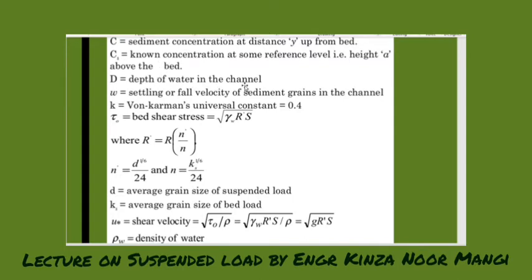Then D is the depth of the water in the channel. W is the settling or the fall velocity of the sediment grains in the channel. K is the von Karman's universal constant that is mostly taken as 0.4.